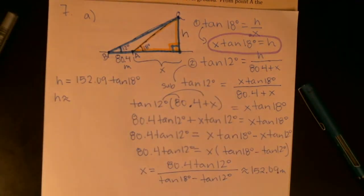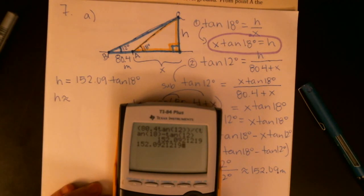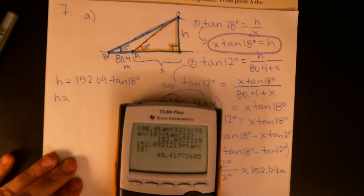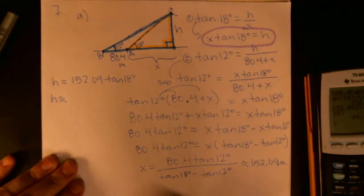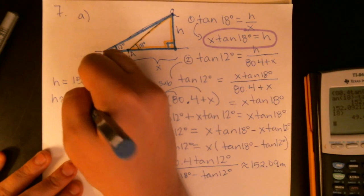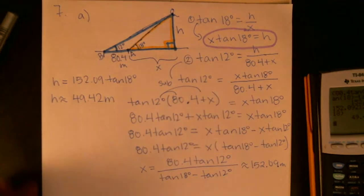So to find our h, last step we'll say h is that 152.09 multiplied by tangent of 18 degrees, which means h is approximately—multiplied by tangent of 18—49.42 meters. So just shy of 50 meters high.